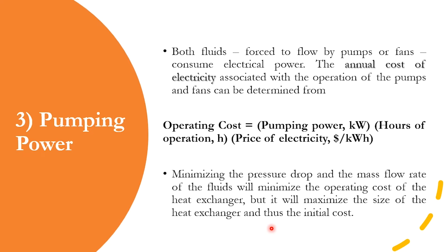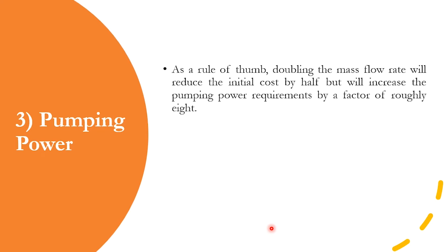Minimizing pressure drop and mass flow rate reduces operational cost, but increases the size of the heat exchanger, which increases initial cost. There is a rule of thumb: doubling the mass flow rate reduces the initial cost — linked to exchanger size — by one half, but leads to an increase in power requirements by a factor of eight. So you always have to find a trade-off, just like in distillation between number of trays and reflux ratio.